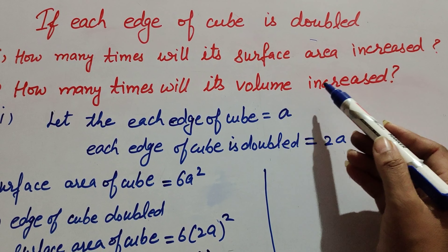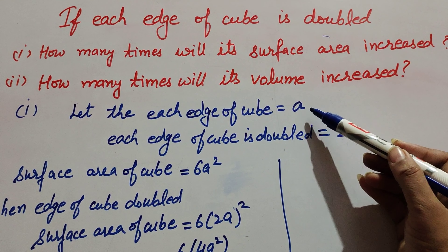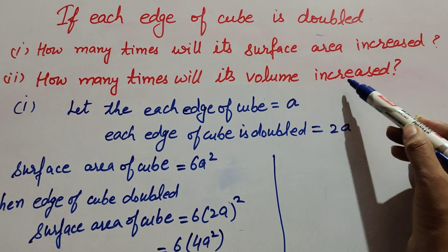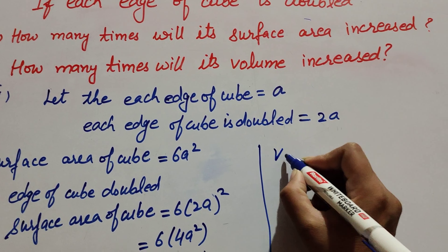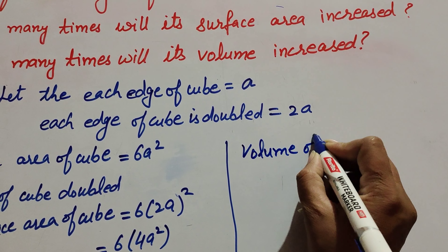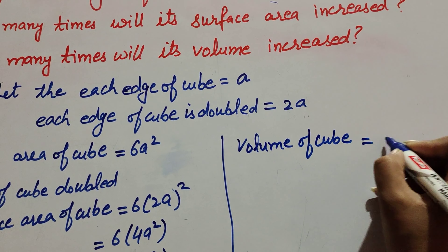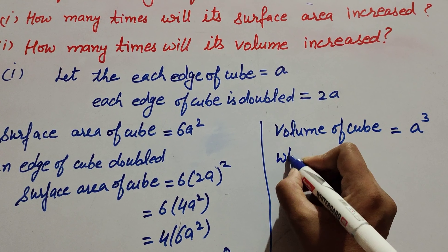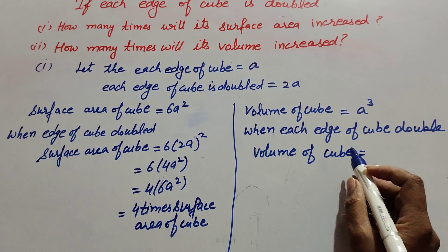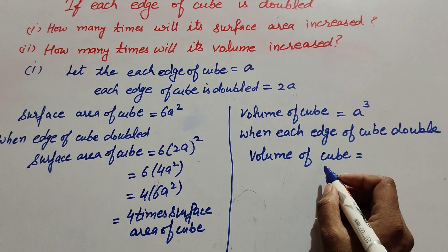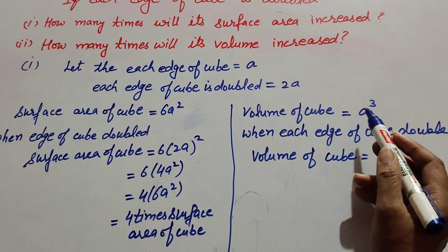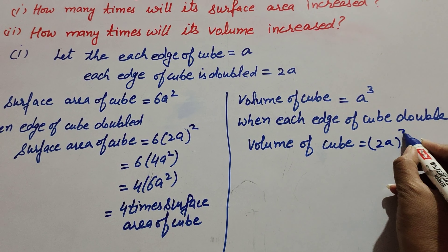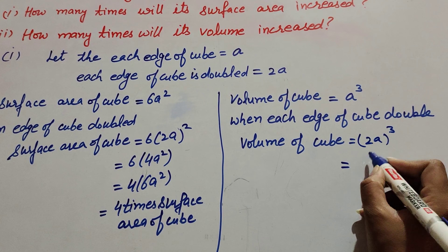Now for the second part: how many times will the volume increase? Each edge of the cube is 'a', so the volume of the cube is a³. When each edge of the cube is doubled, the new side is 2a, so the volume of the cube becomes (2a)³.